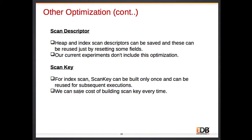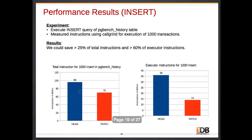Other savings include scan descriptor — once we do heap beginning scan or index beginning scan, whatever descriptor we get, we can reuse it next time by resetting some fields. This is not included in my current performance numbers. Also for index scan, we are building scan keys which we can save, and next time only the runtime keys need to be re-initialized; all other keys can be reused.